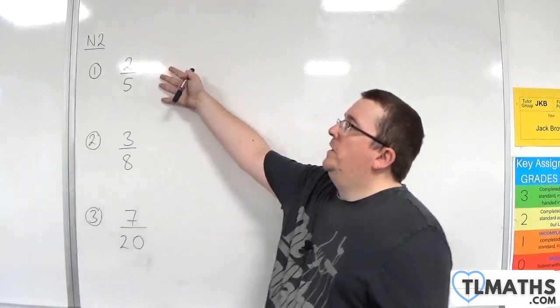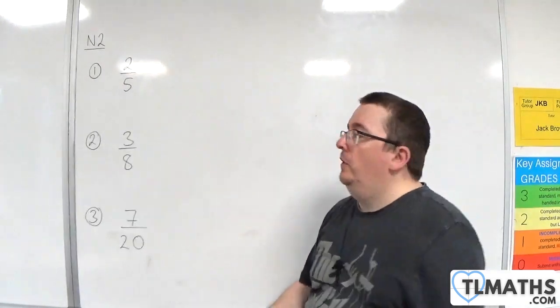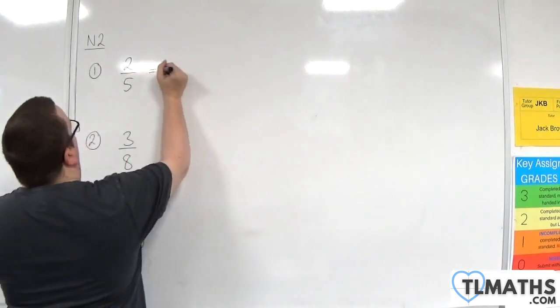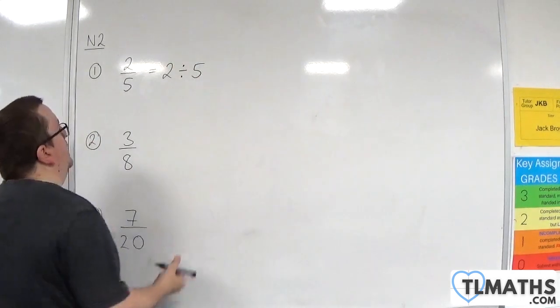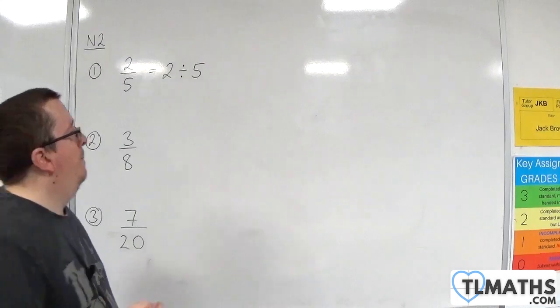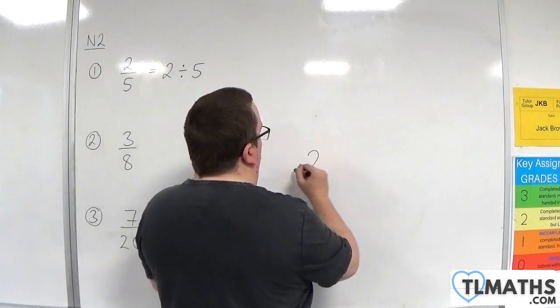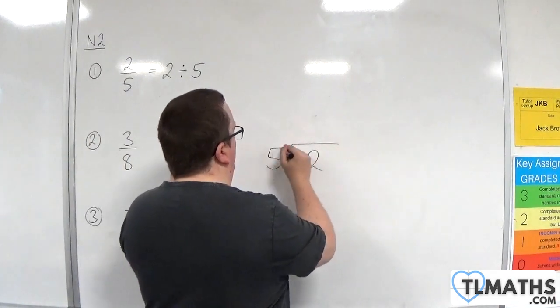If I want to convert two-fifths into a decimal, I need to do the numerator divided by the denominator. So, two divided by five.